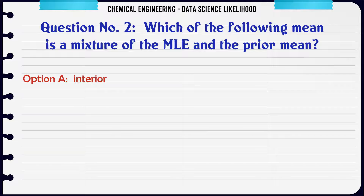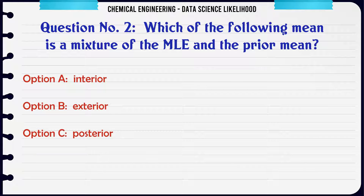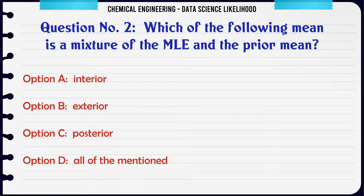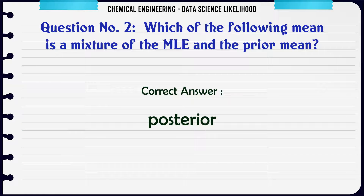Which of the following mean is a mixture of the MLE and the prior mean? A. Interior, B. Exterior, C. Posterior, D. All of the mentioned. The correct answer is Posterior.